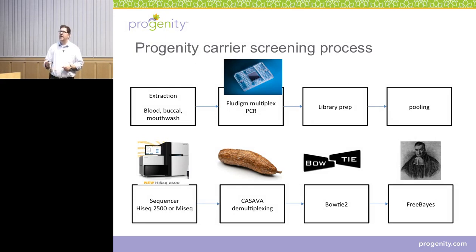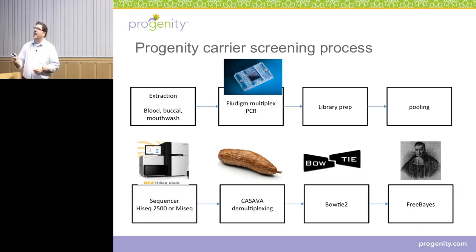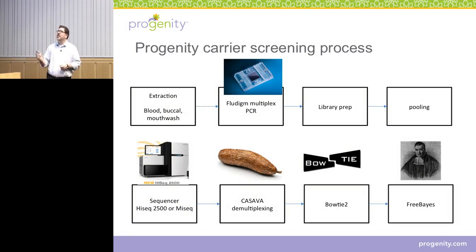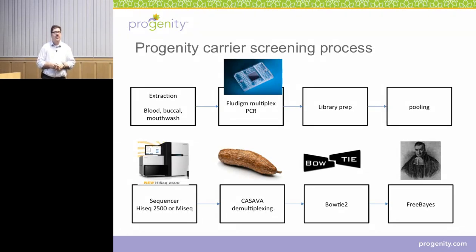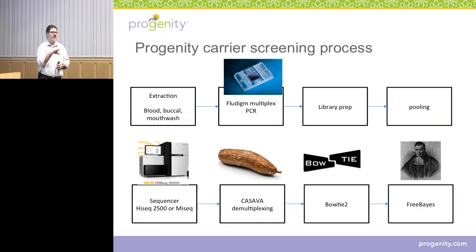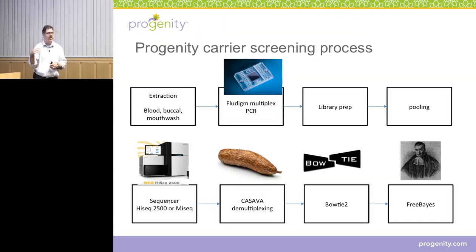When the instrument is done, we use CASAVA to do the demultiplexing. We use Bowtie2 for our aligner, and then we use a variant caller called FreeBayes. This is a really nice choice for our application because we can run it in a mode where it will enumerate alleles that are different from the reference. One of the real pressing issues in carrier screening is related to incidental findings and variants of unknown significance. The nice thing about using FreeBayes is that you can enumerate alleles and then only look for alleles you're specifically testing for, so you don't actually have to worry about incidental findings — you never see them. We run it in a mode where we can specifically look for: are you a carrier of delta F508, S549R, or one of these pathogenic alleles we know about?